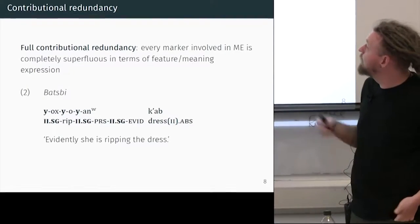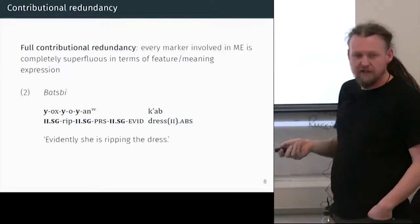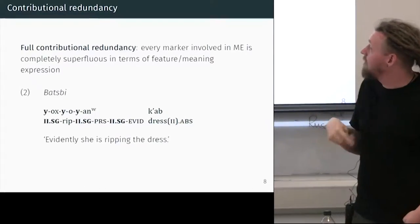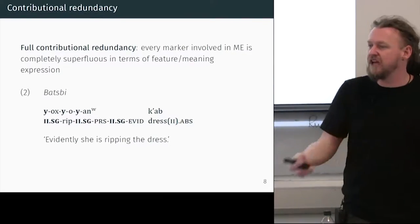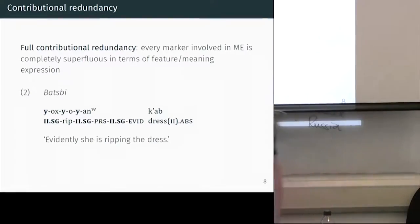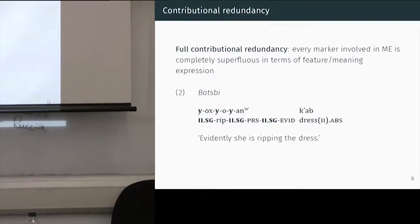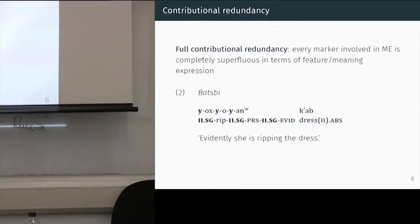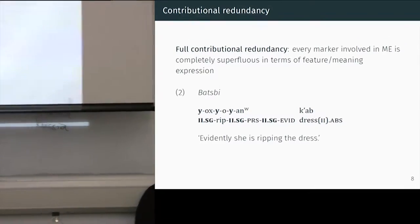The first is called full contributional redundancy. Full contributional redundancy is simply where every marker contributes the same information to the word. Here we have our Batsby example. If we were to remove any of these — if we remove this one — we still know that verb is agreeing with gender two and singular. Even if I remove this one, it's still gender two and singular, because we have this. Nothing is lost by removing any of them: they're all contributing the same. Seems fairly trivial.